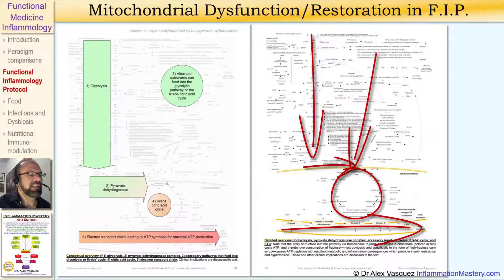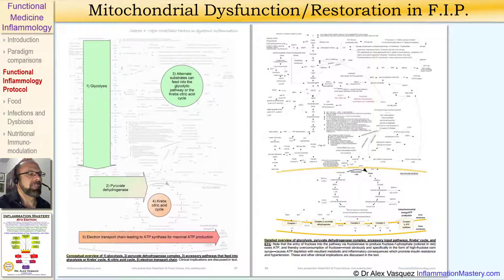The five main components of cellular energy production are: glycolysis, pyruvate dehydrogenase, the Krebs cycle, ATP production through the electron transport chain, and other fuels that can also enter into the Krebs cycle. Typically when we talk about mitochondrial dysfunction, we're talking about defects in the Krebs cycle, but more commonly we're talking about defects in the electron transport chain.